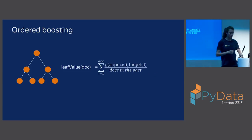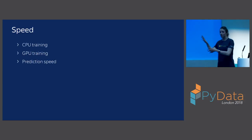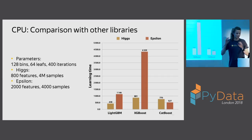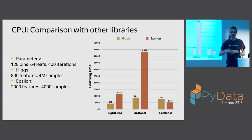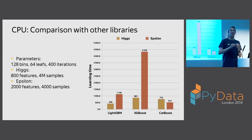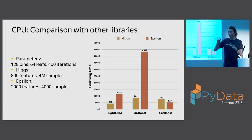Now let me give you some speed benchmarks. Regarding CPU training: when we open sourced in July we were slow, but we have made several speedups since then. On large datasets, CatBoost is around four times faster than XGBoost and roughly the same speed as LightGBM. For smaller datasets it is about the same as XGBoost and about two times slower than LightGBM. We do not yet support sparse data, so if you have a sparse dataset training will be slower, but we are constantly working on improvements.